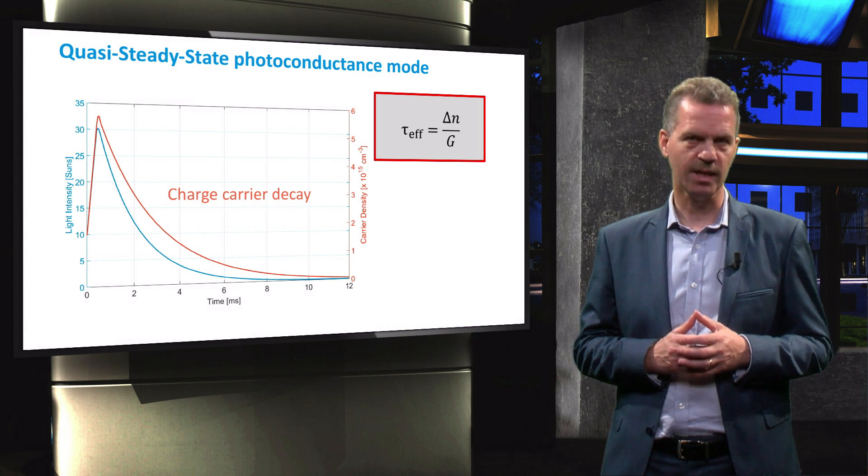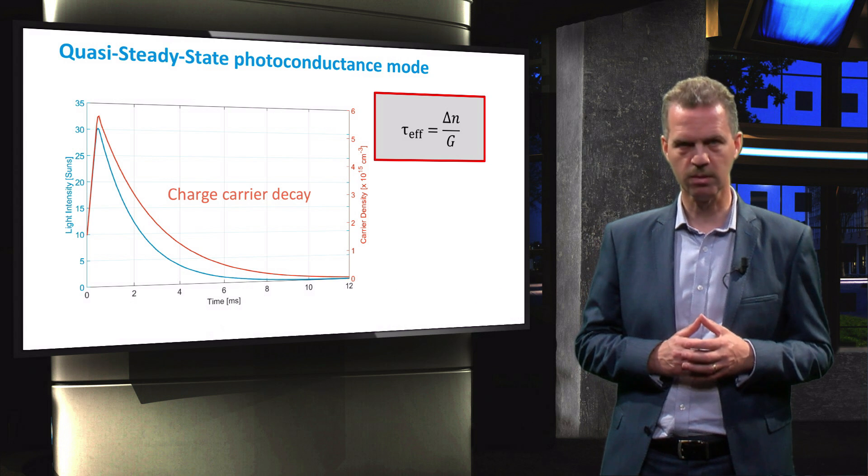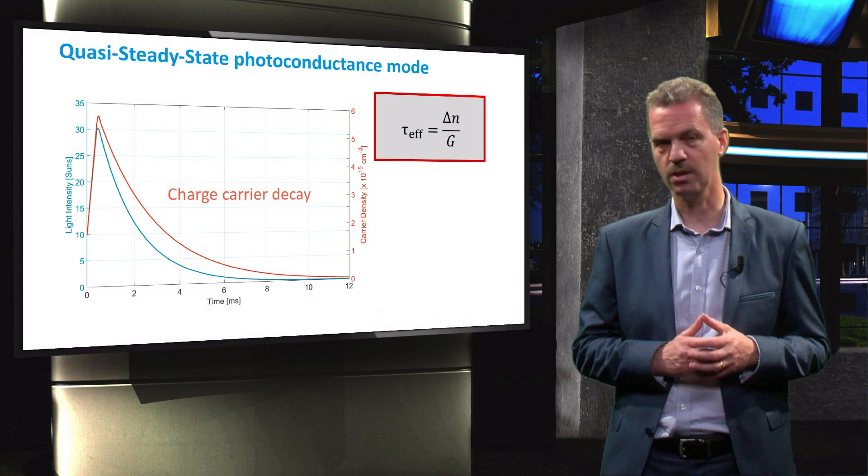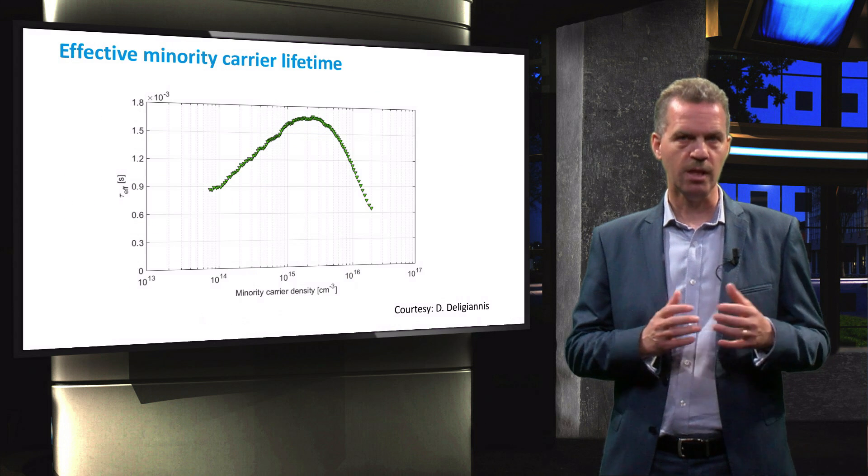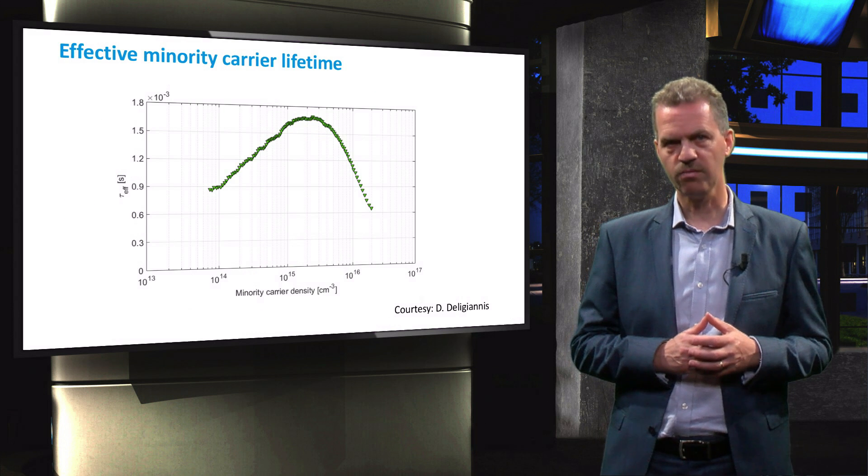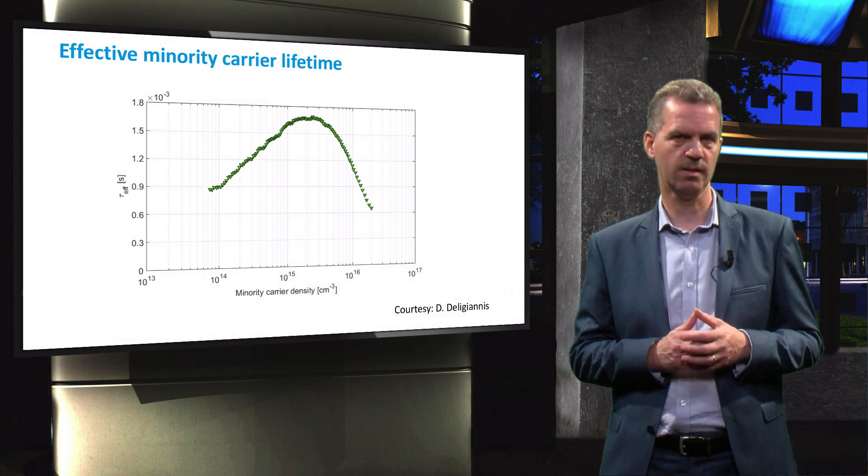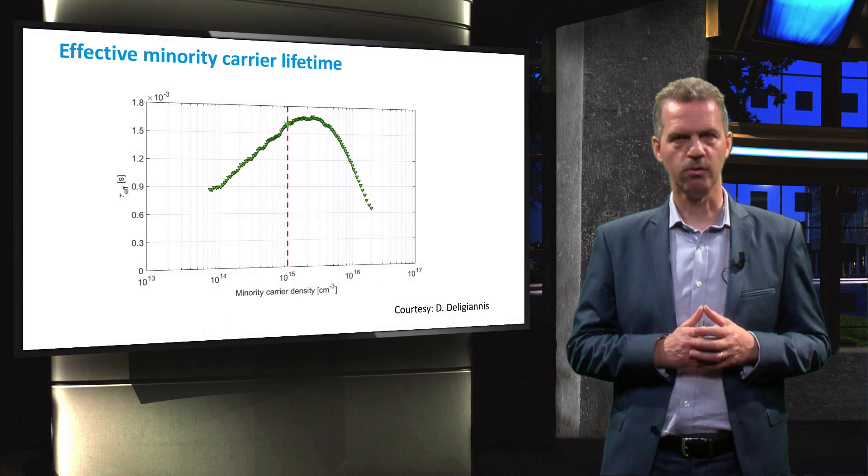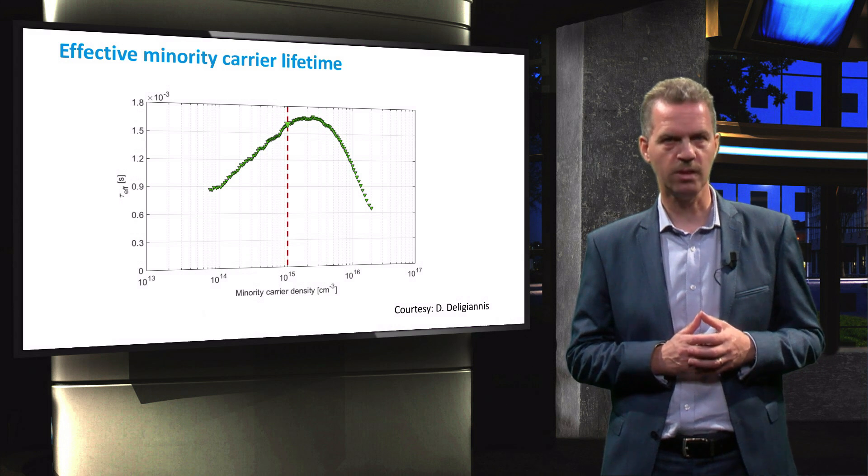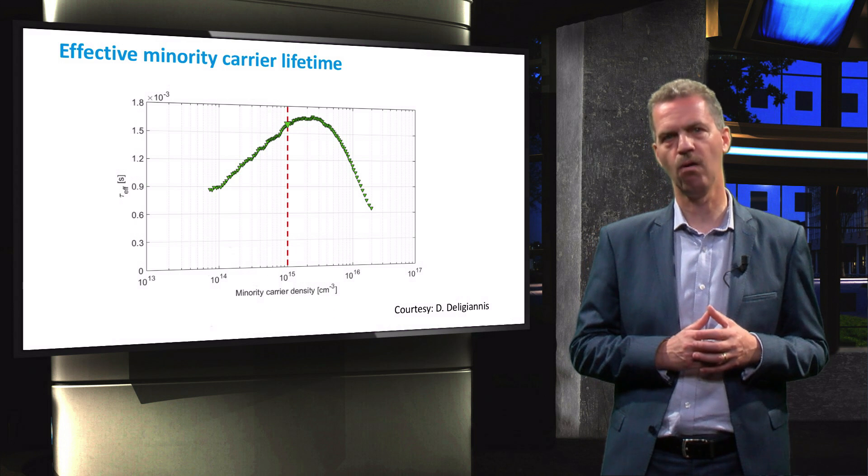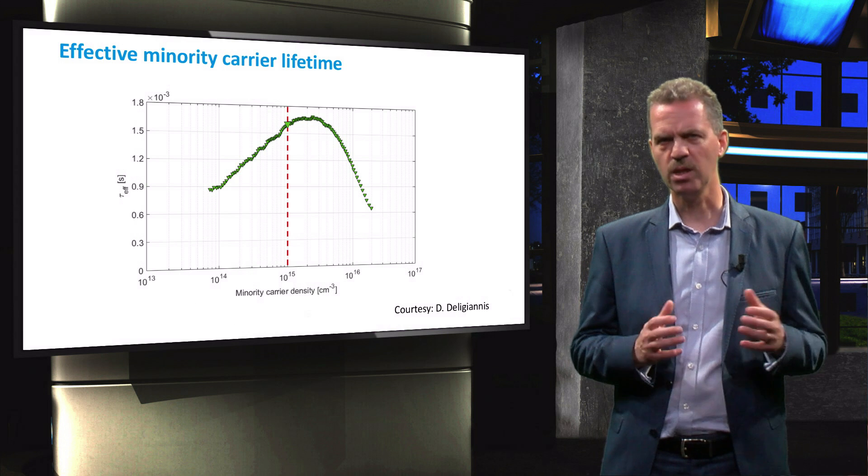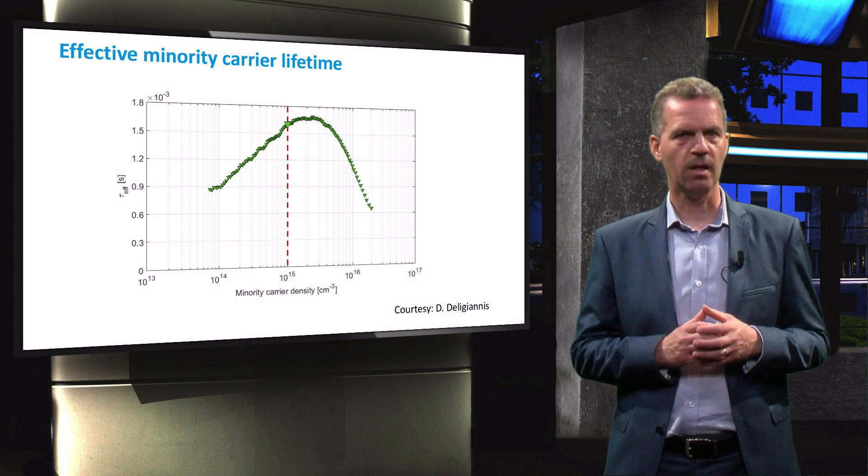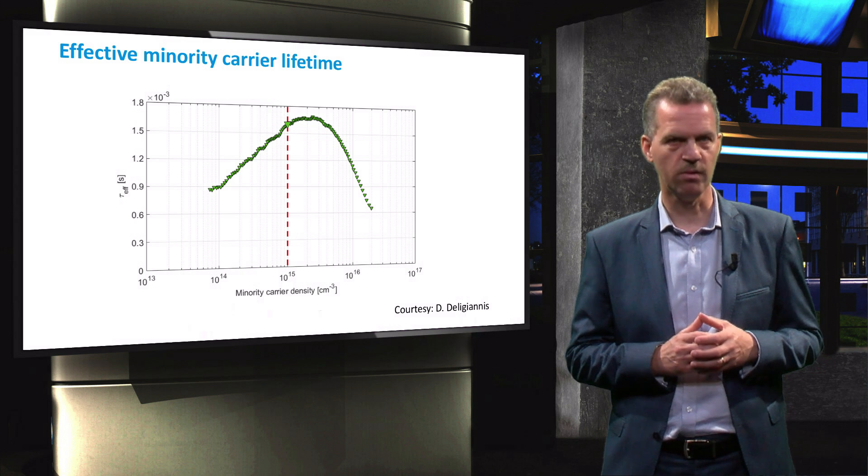The time resolved excess carrier density decay is calculated from the photoconductance measurement, but now it is simply divided by the generation rate to obtain the effective minority carrier lifetime. A typical way of presenting the effective minority carrier lifetime is to plot it versus the minority carrier density, resulting in a graph like as shown here. The actual value for τeff is then often taken at a minority carrier density of 1 times 10 to the power of 15 per cubic centimeter, which is a typical carrier density under one sun illumination. The effective minority carrier lifetime in this sample would then be 1.7 milliseconds.